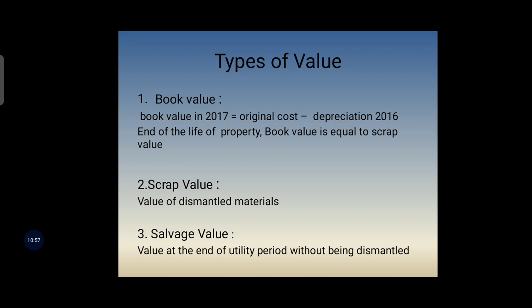Scrap value is the value of dismantled materials of a building when the life of the building is over at the end of its utility period. The dismantled materials such as steel, brass, and timber fetch a certain amount — this is called the scrap value, which may be about 10% of the total cost of construction. Salvage value is the value at the end of the utility period without being dismantled. A machine after completion of its usual span of life or when it becomes uneconomic may be sold, and the sale value at that stage is called salvage value.